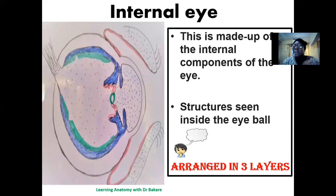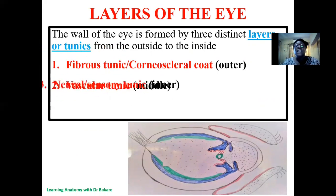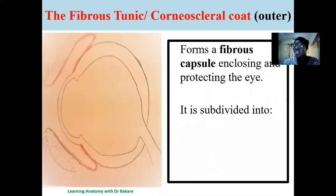The internal compartment of the eye is basically arranged in three layers. The first is the fibrous tunic, the most outer part. The second middle layer is the vascular tunic, located between the outer and inner layer. Then we have the neural or sensory tunic, which is the innermost layer. We'll be taking these layers one after the other to see what they represent and their functions. The fibrous tunic is also referred to as the corneal-scleral coat — the most external layer of the eye, like a fibrous capsule covering the entire eyeball.